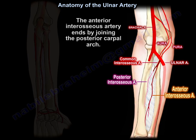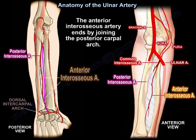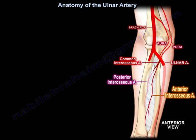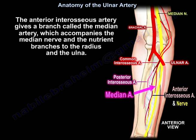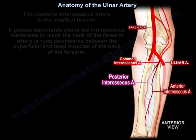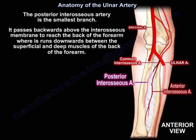The anterior interosseous artery ends by joining the posterior carpal arch. It also gives a branch called the median artery, which accompanies the median nerve, and nutrient branches to the radius and the ulna.